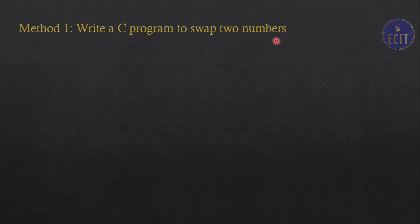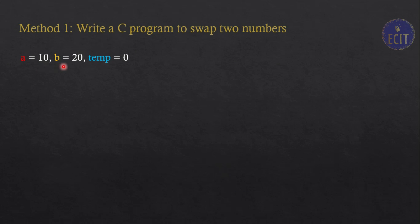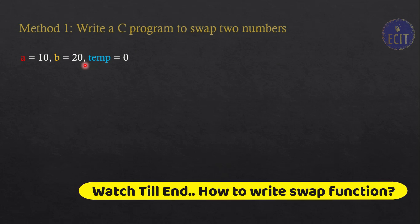The first method is dedicated to swapping two numbers using three variables. Let's consider we have three variables: a, b, and temp. We want to swap the numbers between a and b. Here we can see that a is equal to 10 and b is equal to 20.